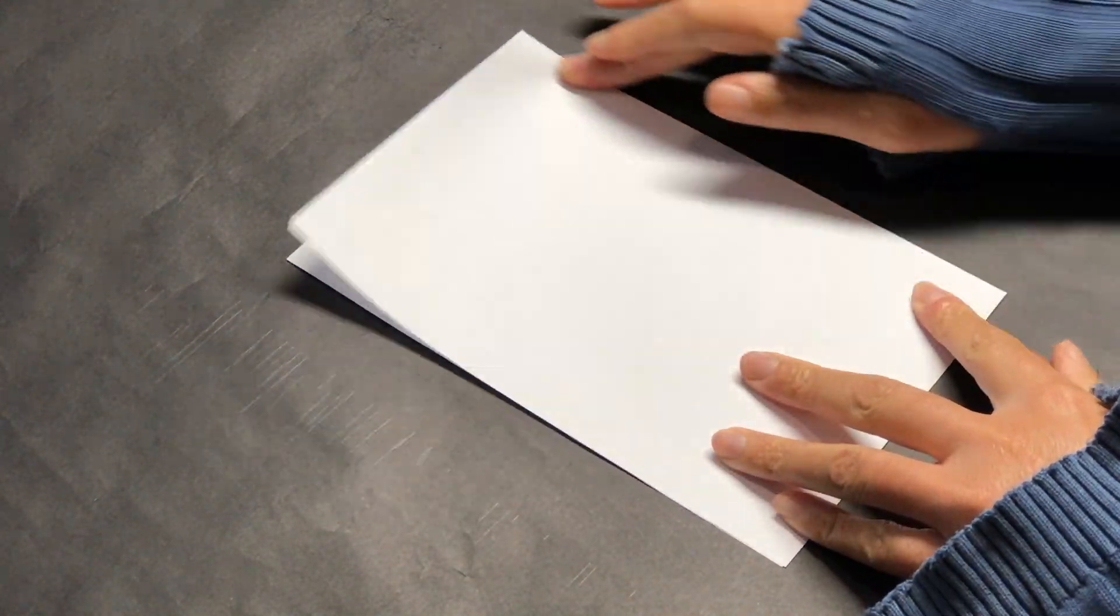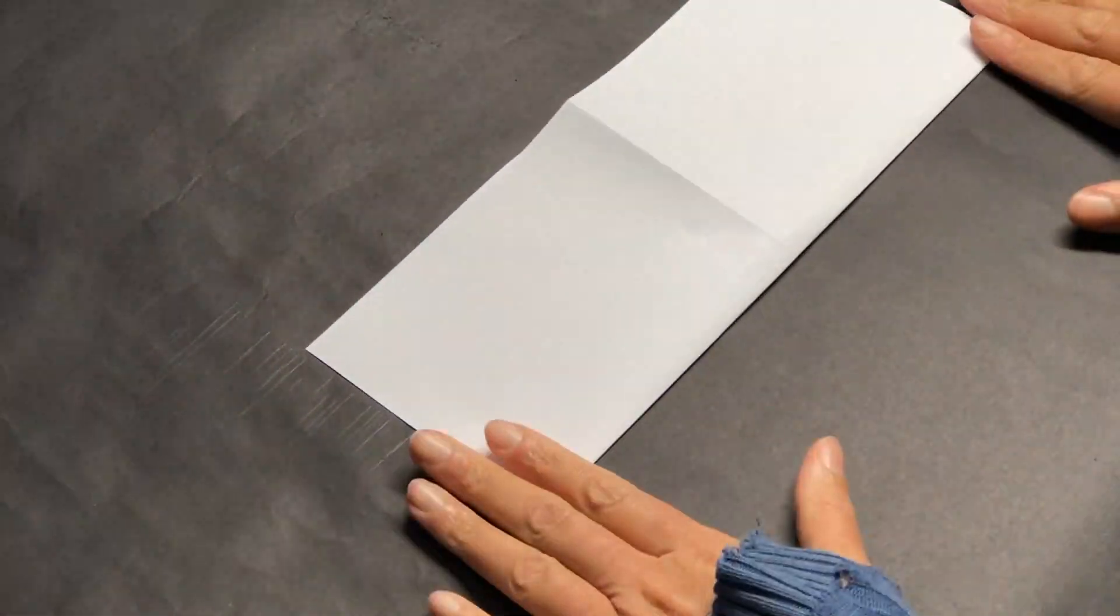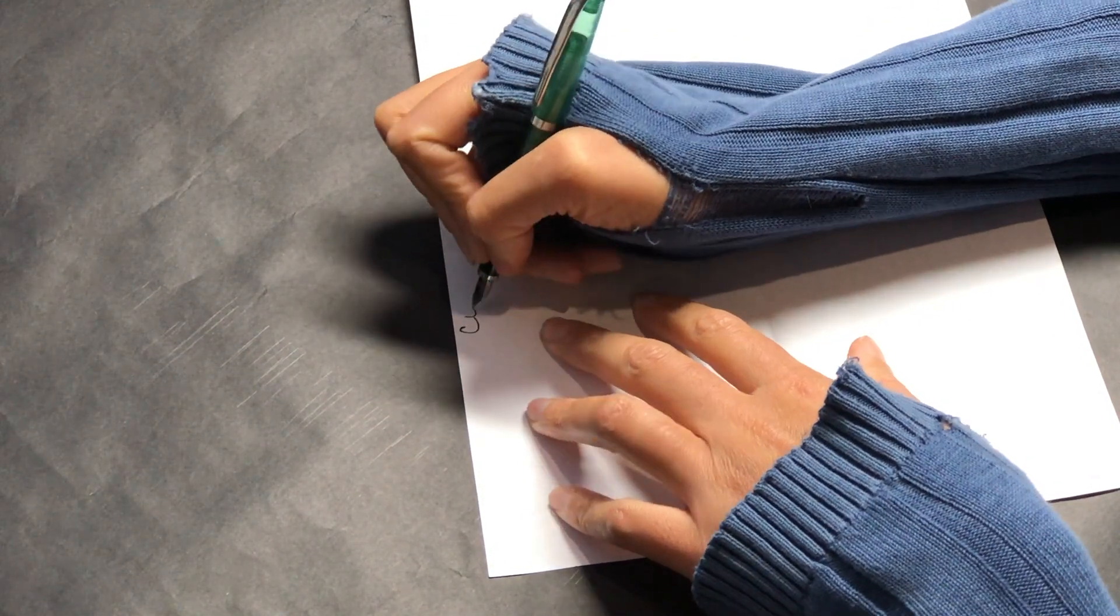Once you have your paper, you will fold it in half and then fold it in half again. It doesn't matter which way you get to your four quadrants, just make sure you have four.